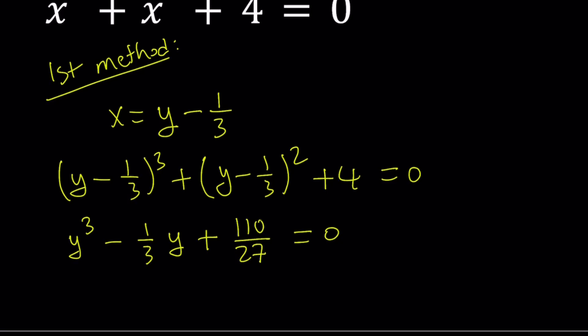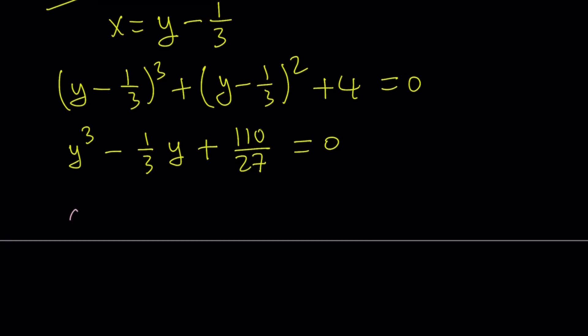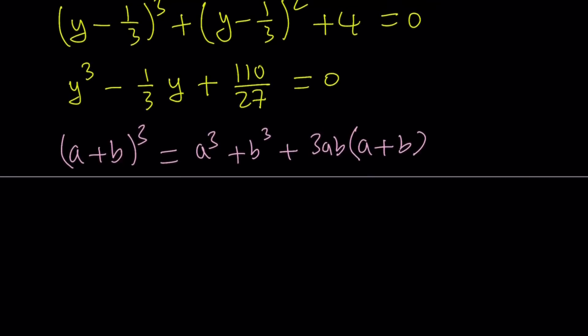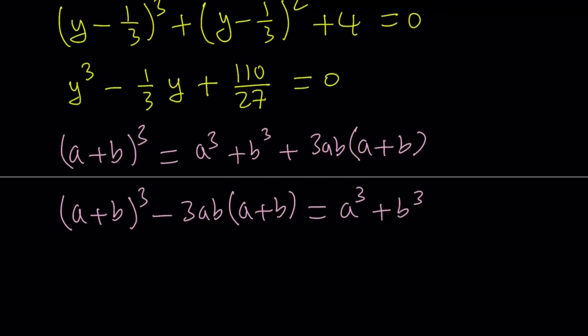To be able to use Cardano's method, let's consider the following. We used this method before. Consider a plus b quantity cubed, but in a different way. I'm going to write it as a cubed plus b cubed plus 3ab times a plus b. This is an identity used very often in my videos. Let's put everything except for the sum of two cubes on the same side. So I can write it as a plus b quantity cubed minus 3ab times a plus b equals a cubed plus b cubed.